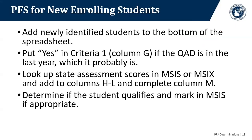Now let's talk about what you do as new students enroll in your district. If you have a new student you've just identified as a migratory student, add their name and test information to the bottom of the spreadsheet. A newly identified student probably has a qualifying arrival date in the last year, so you can put yes for criteria one in column G. Look up the state assessment scores in MSIS or M6 and add that information to columns H through L. Complete column M — whether the student has previously dropped out — then determine if the student qualifies and mark them in MSIS if appropriate.